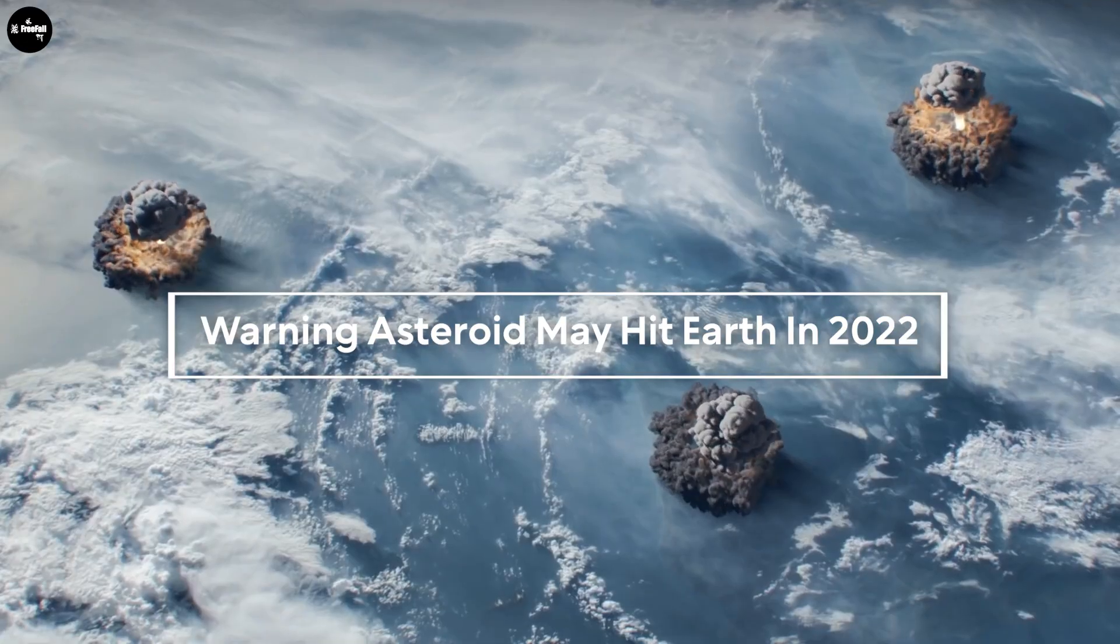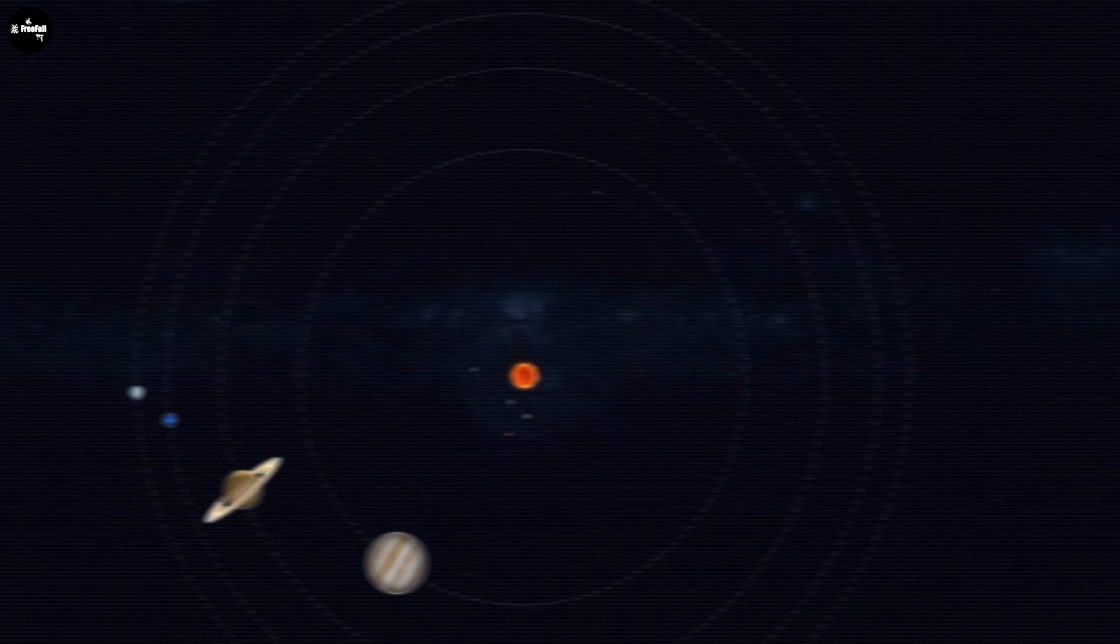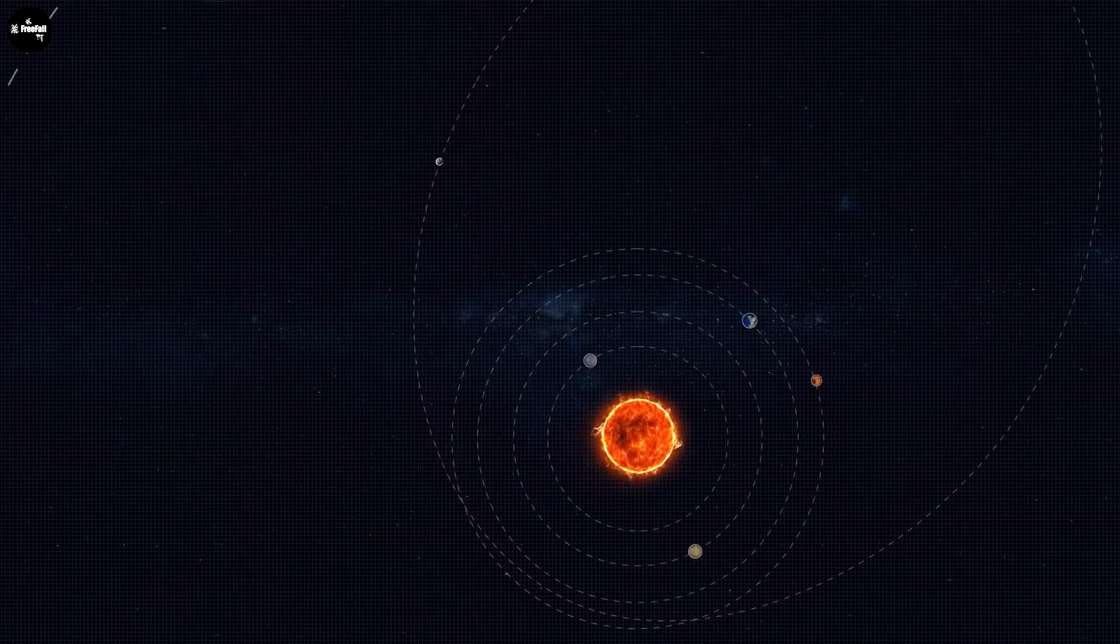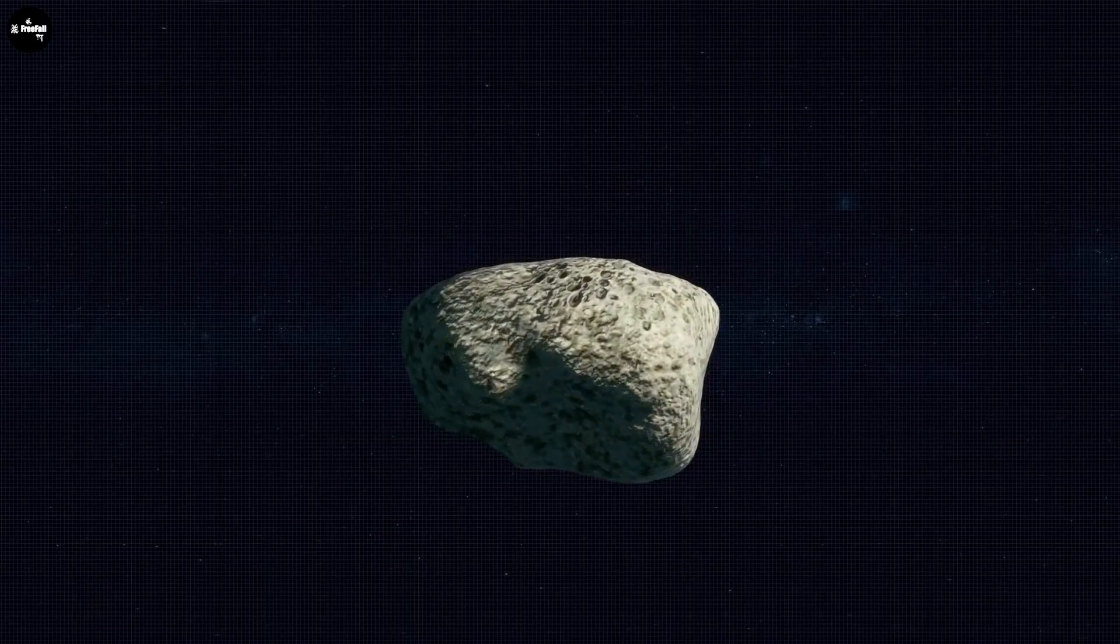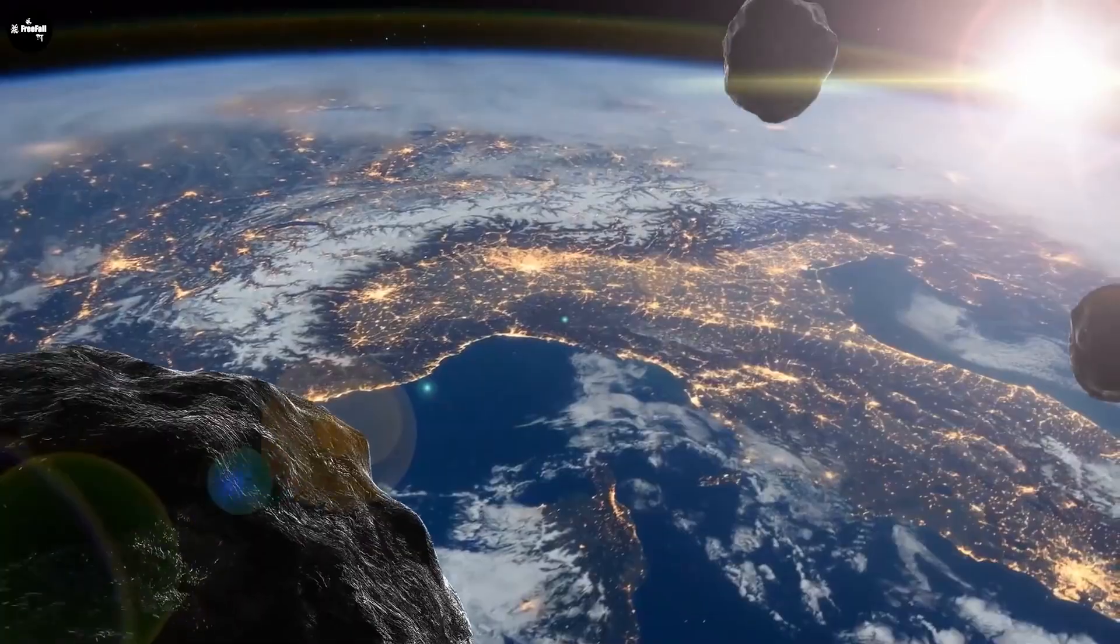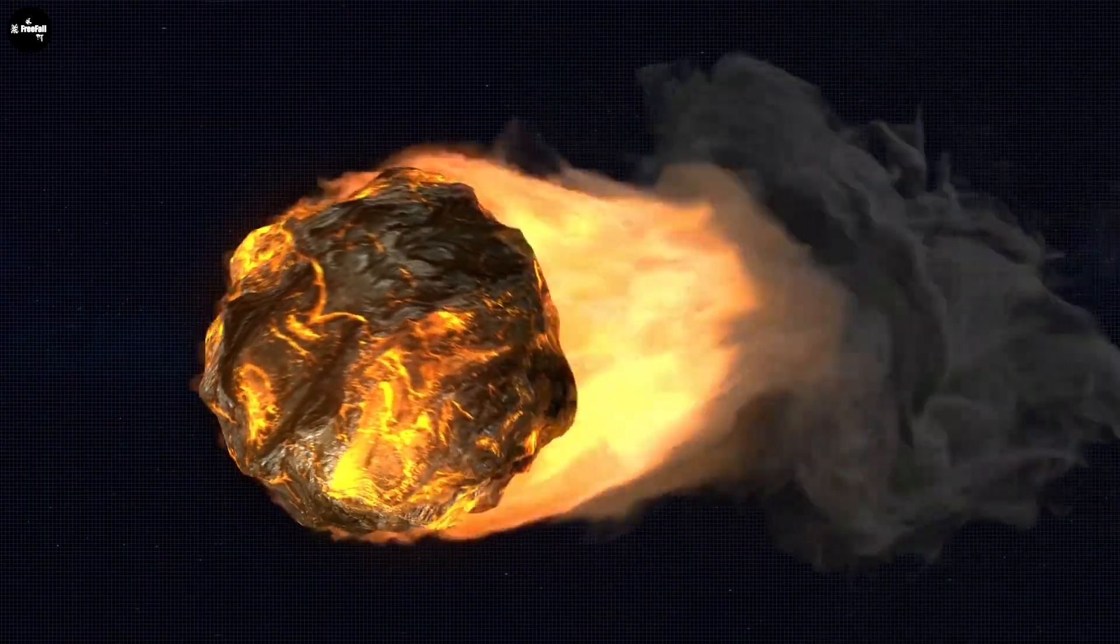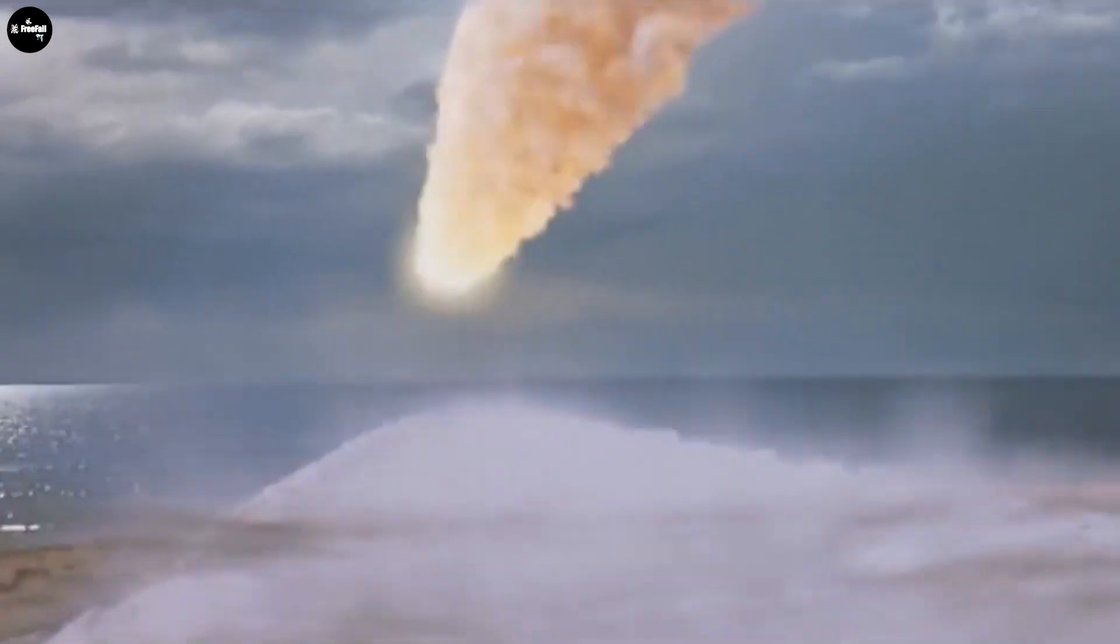Asteroids may hit Earth in 2022. The US Space Agency defines meteorites as rocks in space that are smaller than planets, sometimes called asteroids. Some call them space junk or leftover pieces from the formation of the solar system. This is a natural object from outer space that impacts the Earth's surface.